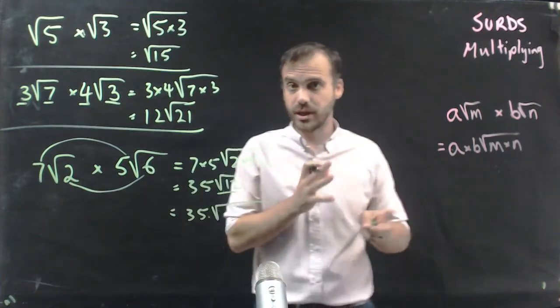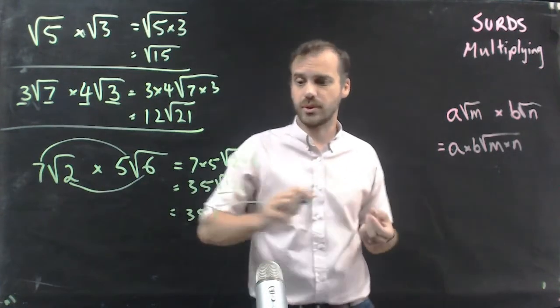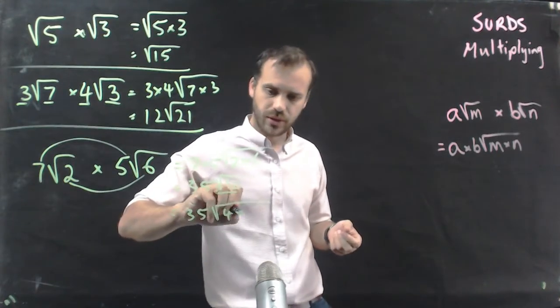12 can be broken up. And one of those things is going to be a square number. 4 times 3.